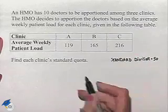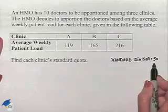To find the standard quota, we're going to take each of the populations and divide by the standard divisor.